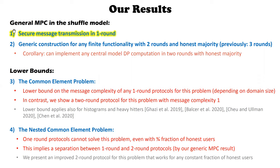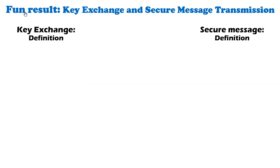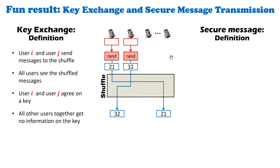Now I'll show how we construct secure message transmission in one round. First, let's recap key exchange and secure message transmission. For key exchange: two users I and J first submit messages to the shuffle, then everybody sees the shuffled messages. The requirement is that users I and J agree on a key, but all other users — even together — get no information on the key.